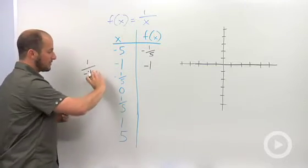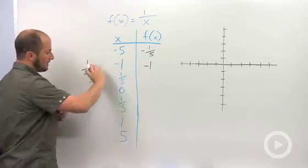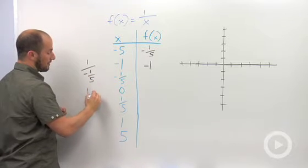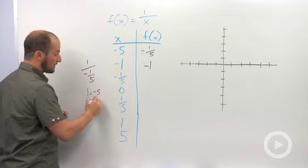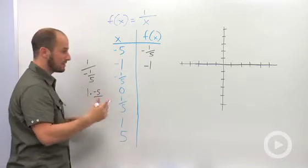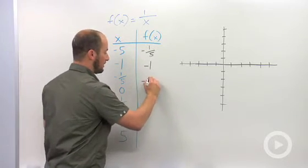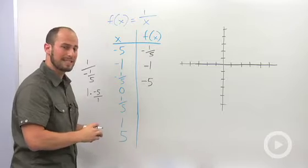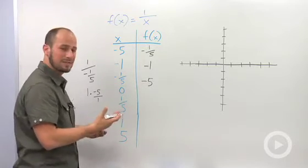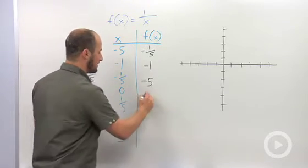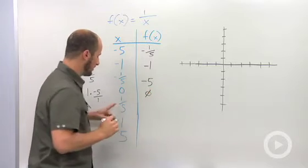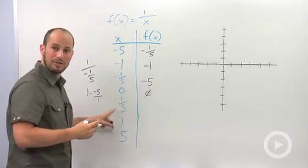We actually multiply by the opposite, so this is one times negative five over one, which turns into negative 5. We plug in 0: one over zero. What is one over zero? We can't divide by zero, so this is undefined.